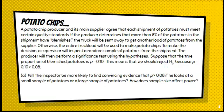A potato chip producer and its main supplier agree that each shipment of potatoes must meet certain quality standards. If the producer determines that more than 8% of the potatoes in the shipment have blemishes, the truck will be sent away to get another load of potatoes from the supplier. Otherwise, the entire truckload will be used to make potato chips. To make a decision, the supervisor will inspect a random sample of potatoes from the shipment. The producer will then perform a significance test using these hypotheses. Suppose that the true proportion of blemished potatoes is P equals 0.10, so 10%. This means that we would reject the null because the true proportion 10% is greater than 8%. Will the inspector be more likely to find convincing evidence that the proportion is greater than 8% if he looks at a small sample of potatoes or a large sample of potatoes? And how does this affect power?